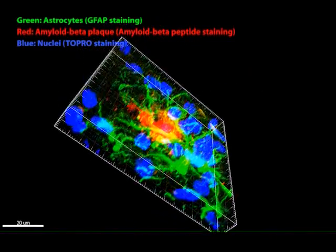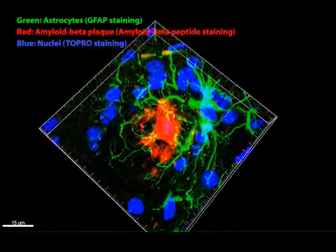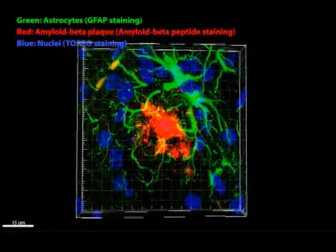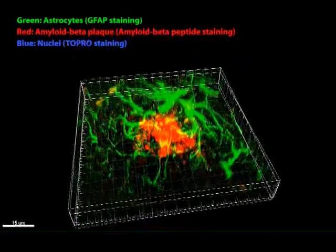Here, plaques are stained in red using anti-A-beta antibody, and astrocytes are labeled in green with an antibody against glial fibrillary acidic protein, or GFAP.